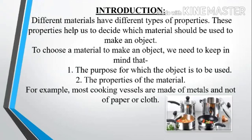Introduction. In this we will understand about the properties of materials. Different materials have different types of properties. These properties help us to decide which material should be used to make an object. To choose a material to make an object, we need to keep in mind: first, the purpose for which the object is to be used; second, the properties of the material. For example, most cooking vessels are made of metals and not of paper or cloth.